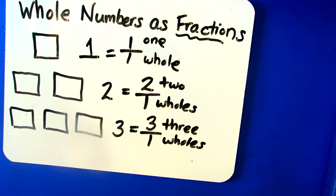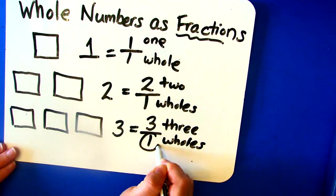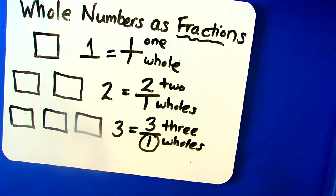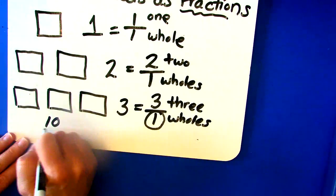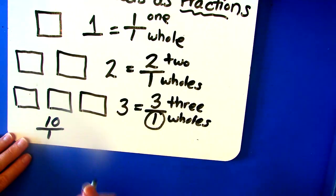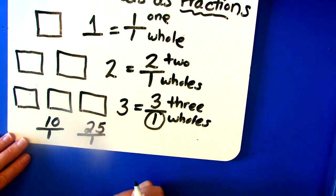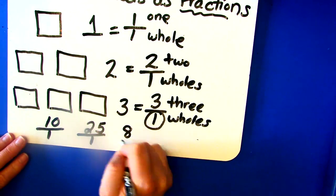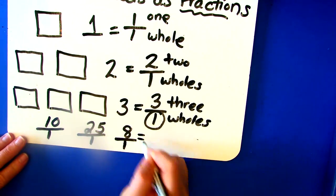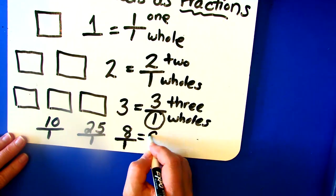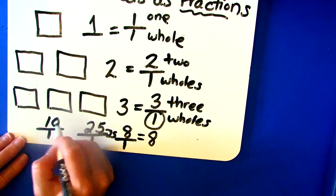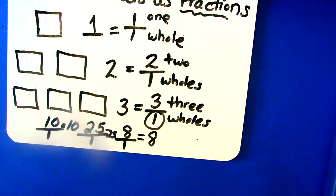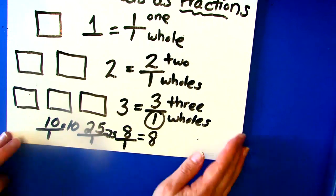So boys and girls, anytime you have a fraction with a denominator of one, that one represents wholes. And you can represent any whole number as a fraction with a denominator of one. This means ten wholes. This means 25 wholes. This means eight wholes. All of these fraction names represent whole numbers. Eight wholes represents the number eight, twenty-five wholes represents the number 25, and ten wholes represents ten. This is how you can write whole numbers as a fraction with a denominator of one.